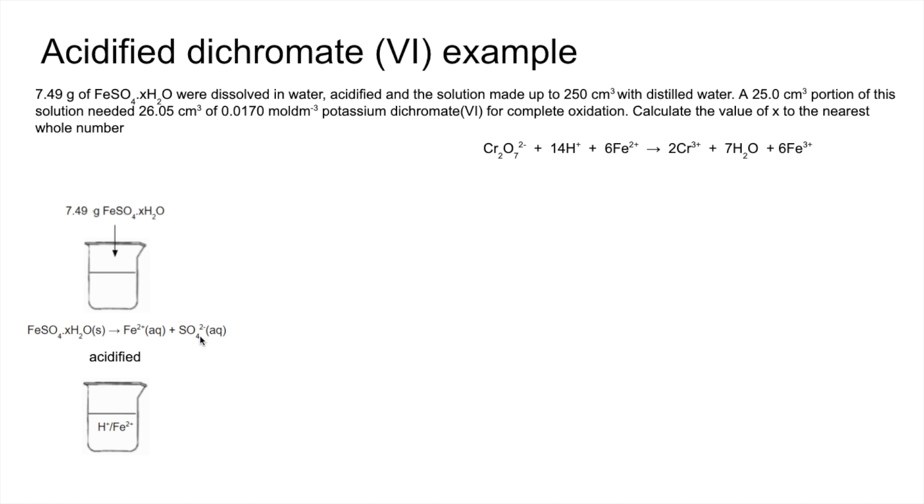So it's acidified, and then we've got this beaker of aqueous Fe2+ ions and H+ ions that's then poured into the 250 cm³ volumetric flask. 25 cm³ is taken out for the titration.